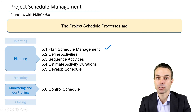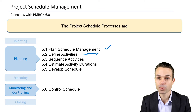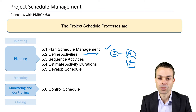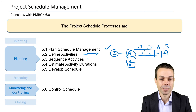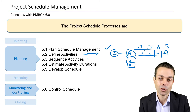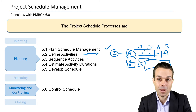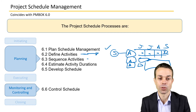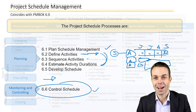The processes you'll see as part of Project Schedule Management are: planning schedule management — how we plan out the schedule and what tools and techniques we'll use; defining the activities according to the deliverables; turning those activities into a schedule over time; sequencing items into dates; estimating activity durations; and ultimately developing our schedule. Once the project is being executed, we then need to control that schedule and make sure it stays on track.